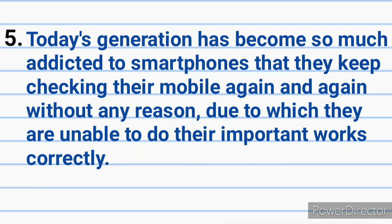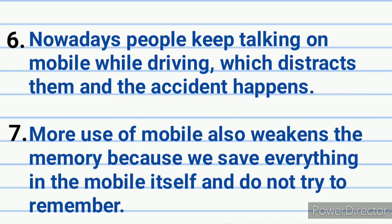Fifth, today's generation has become so much addicted to smartphones that they keep checking their mobile again and again without any reason, due to which they are unable to do their important works correctly. Sixth, nowadays people keep talking on mobile while driving which distracts them and accidents happen. Seventh, more use of mobile also weakens the memory because we save everything in the mobile itself and do not try to remember.